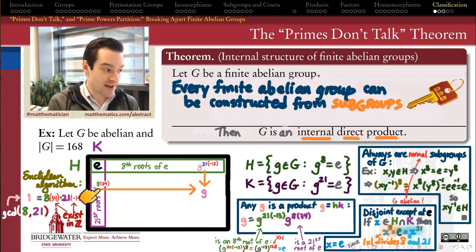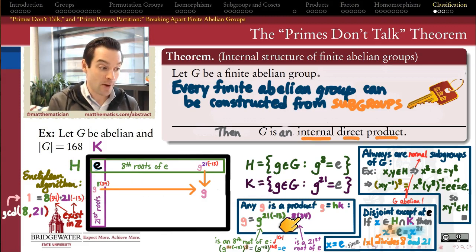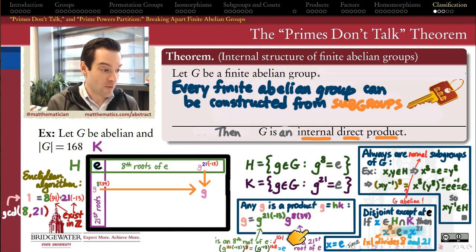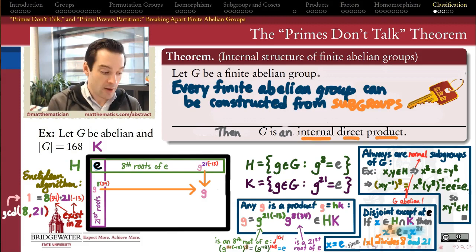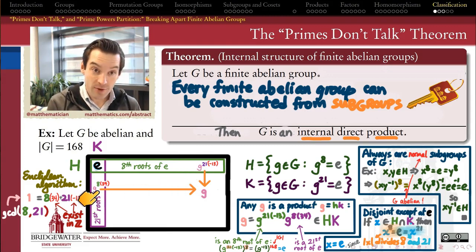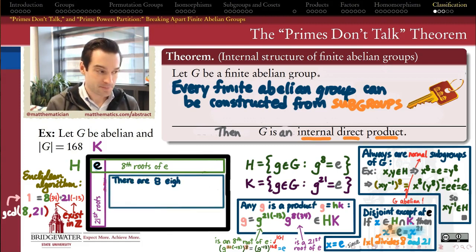The very same logic applies to G^(8·34). When raised to the 21st power, the 21 and the 8 combine to give 168, and we again get a 168th power of an element, which must be the identity. Therefore G^(8·34) belongs to K. We've now shown that every element in the group can be written as a product of some eighth root of the identity with some 21st root of the identity. Since those eighth roots and 21st roots respectively form two normal subgroups whose intersection consists only of the identity element, we have proven that G is an internal direct product of H with K.